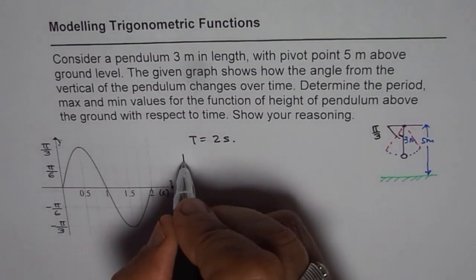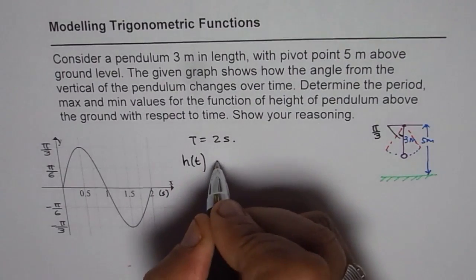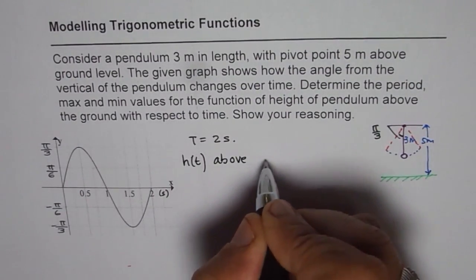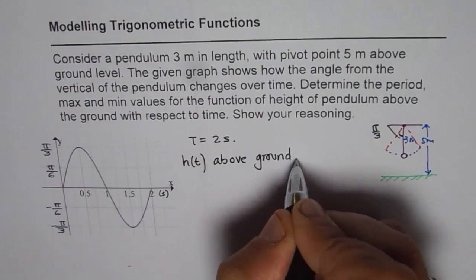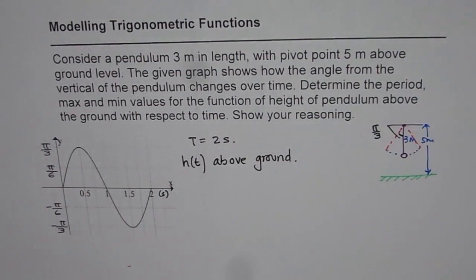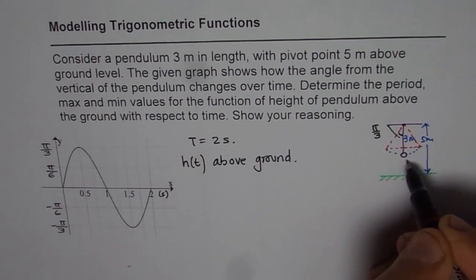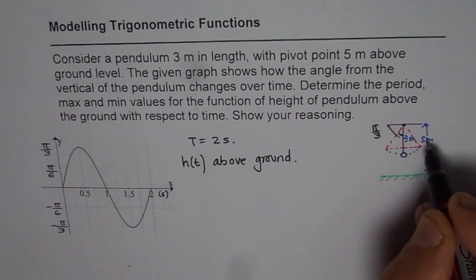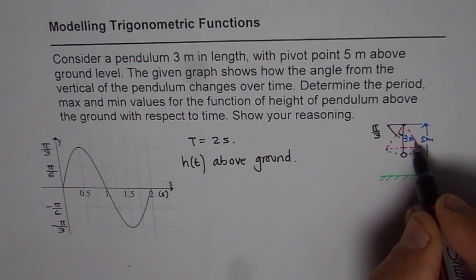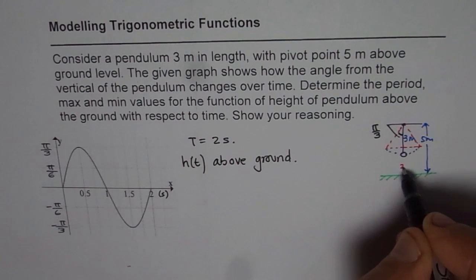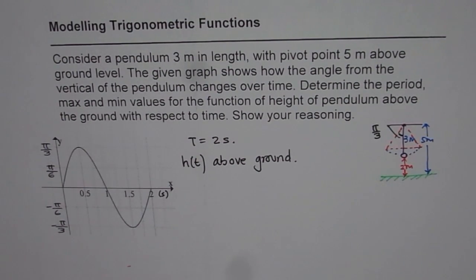So we need to find height above ground. So basically what happens is as the pendulum moves upwards, the height will decrease kind of like this. So in the normal position, height is going to be five minus three, which is two meters. So that is the height when the pendulum is at its lowest position.